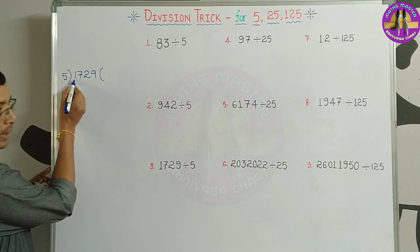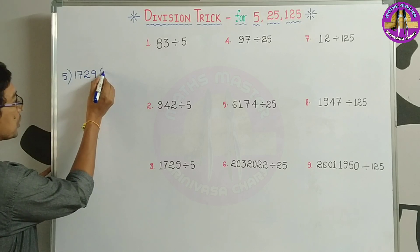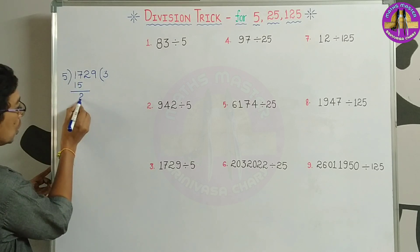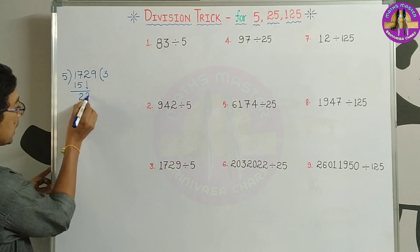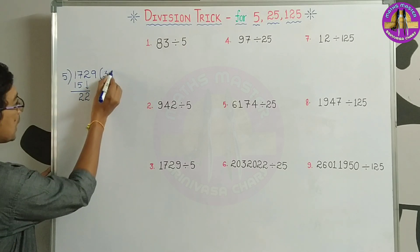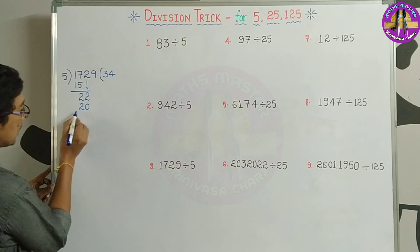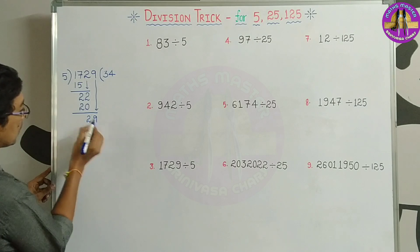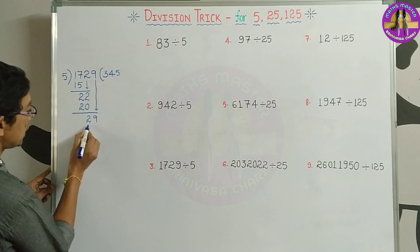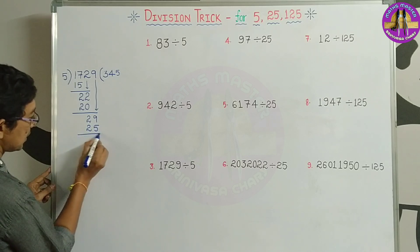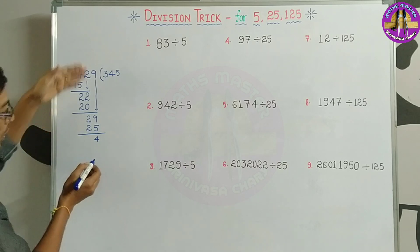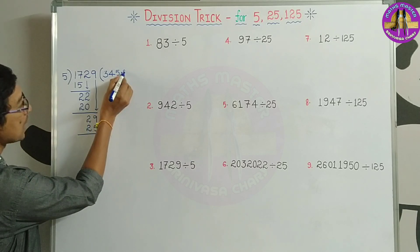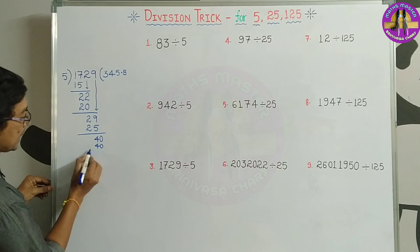Let's take the first digit. We will add 17; 3 fives are 15. Here we have remainder 2. Next, bring down 2, we have 24. 5 fours are 20. Here we have remainder 2. Next, I am taking the next digit that is 9: 5 fives are 25. Next, here we have remainder 4. There is no digit to take here, so now I keep a decimal point here. Take 0. 5 eights are 40, so remainder is 0.